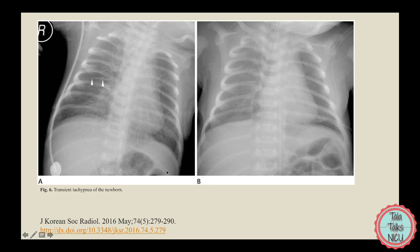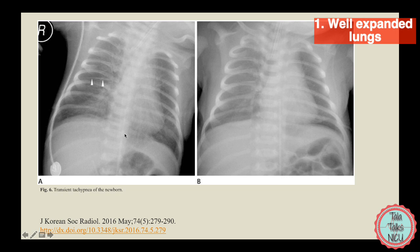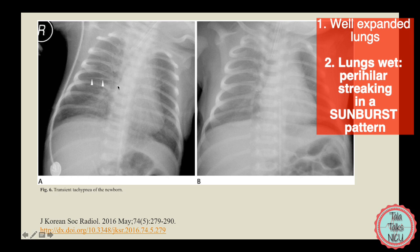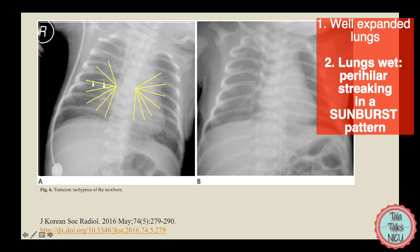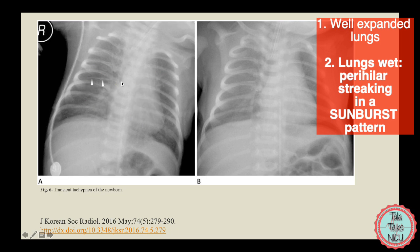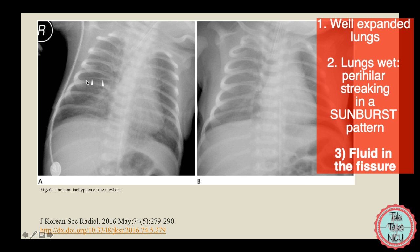Moving on to another chest x-ray with TTN, which again shows the lungs to be well expanded. You can see the whole x-ray looks a little wet — there's white streaking all over. Again, this is the fluid. You can see this most prominently at the hilum, which is where the bronchi and the vessels come out from. Here you can see prominent vascular markings in what is called a sunburst pattern — the rays of the sunburst originating at the hilum.